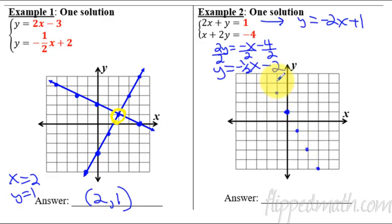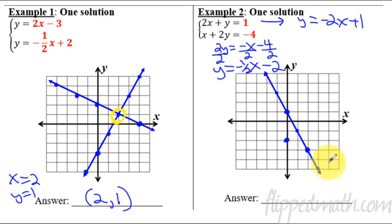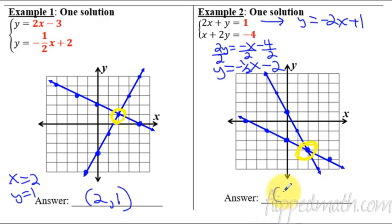So I'll do this one here. We've got a y-intercept of one, and then a slope of negative two. Down two, right one, down two, right one, and so forth. Or I can go up two, left one, up two, left one. Draw my line. My other line has a negative two y-intercept. Slope is negative one half — that means down one, right two, down one, right two. Or I could go up one, left two. And then this here is my solution. My answer is the coordinate point negative three. There's my solution.